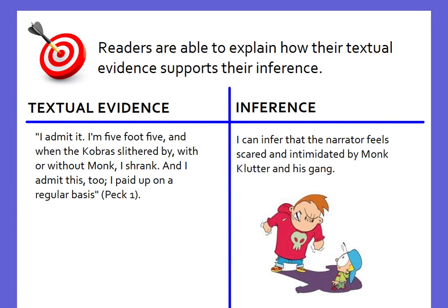I'm going to model this skill today using Priscilla and the Wimps. My textual evidence is this: 'I admit it, I'm five foot five, and when the cobra slithered by with or without Monk, I shrank. And I admit this too. I paid up on a regular basis.' From this piece of evidence, I can infer that the narrator feels scared and intimidated by Monk Clutter and his gang.